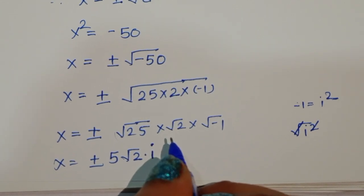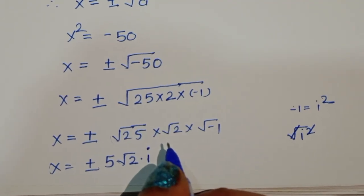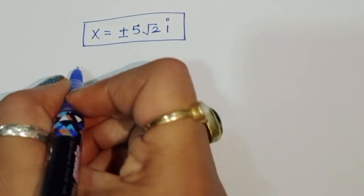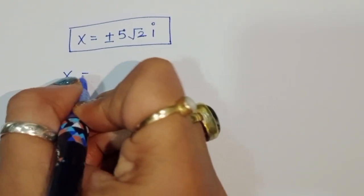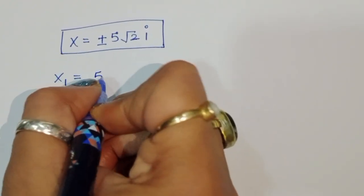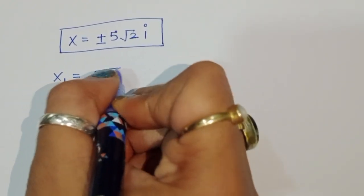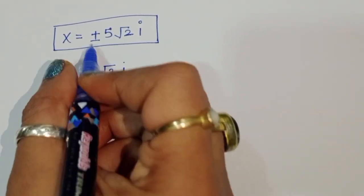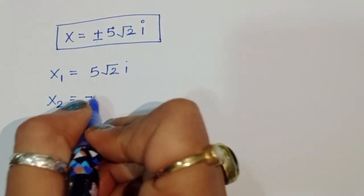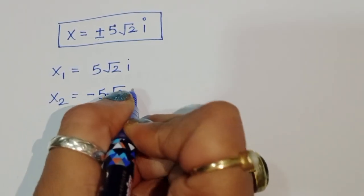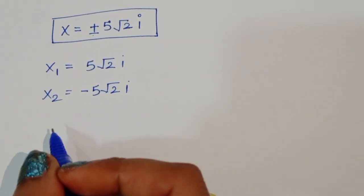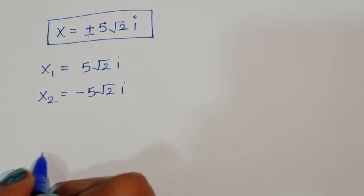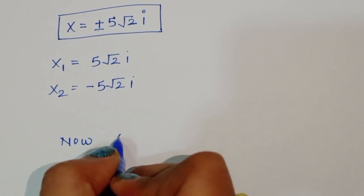So x equals plus or minus 5 times the square root of 2 times i. Therefore x₁ equals 5√2·i and x₂ equals negative 5√2·i. Now we take the second equation.